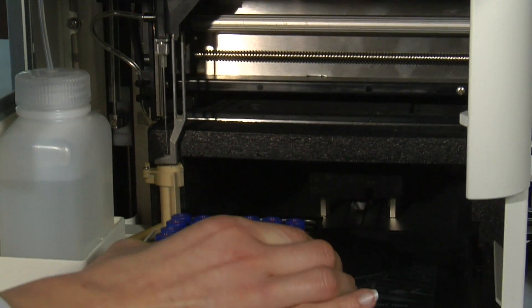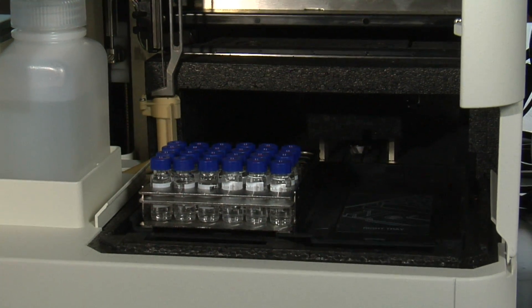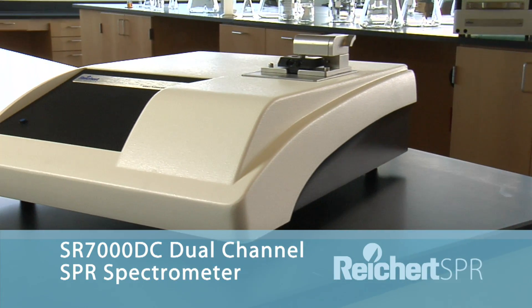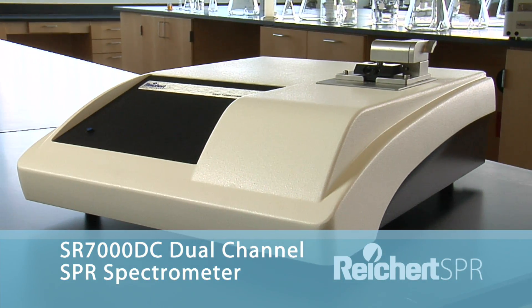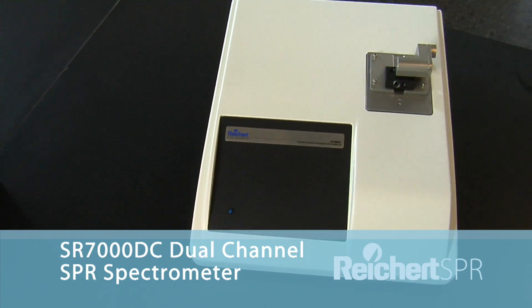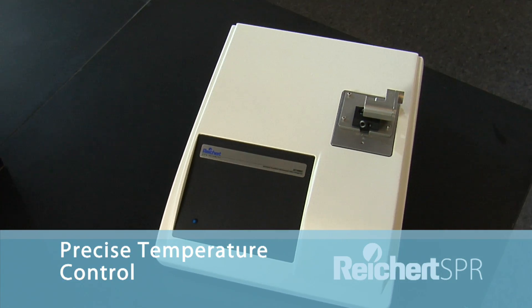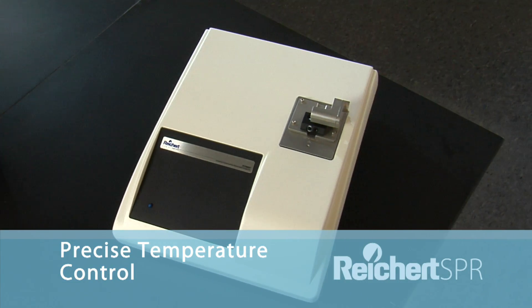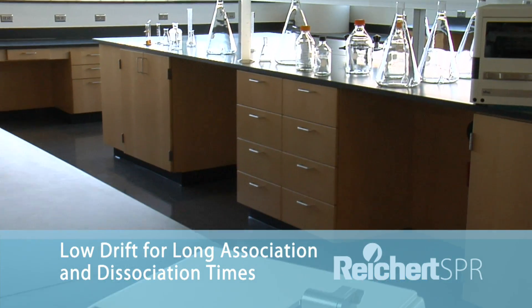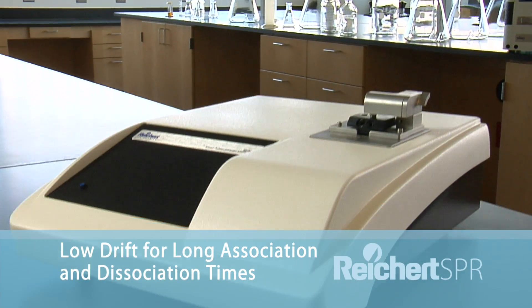You can assemble the most ideal system of components for the volume of samples to be tested. The heart of the system is the SR-7000 DC dual-channel SPR spectrometer. Implementing high-quality optics along with precise temperature control, the SR-7000 DC offers extremely low noise levels with high-speed scanning for fast kinetics and low drift, enabling long association and dissociation times.